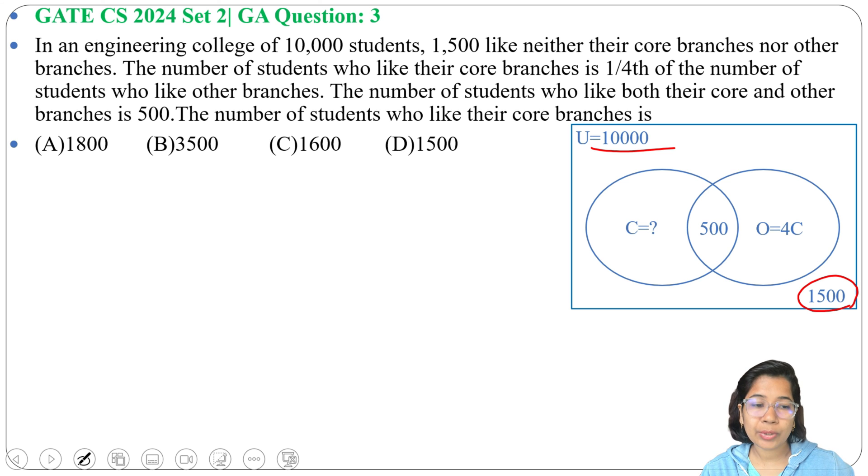U equals to 10,000, and from that 1,500 doesn't like anyone. So C union O will be 10,000 minus 1,500, which is 8,500. This 8,500 is C union O, the students who like core branches or other branches.